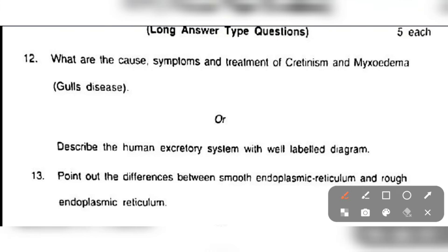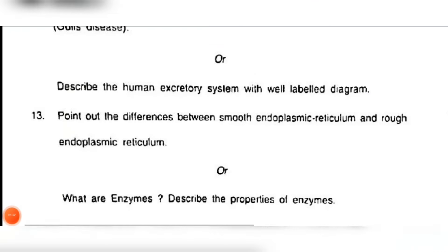Now we have question number twelve. What are the causes, symptoms, and treatment of cretinism and myxedema? Or the other part, you have to describe the human excretory system with well-labeled diagram. You have to make a diagram of the kidney.